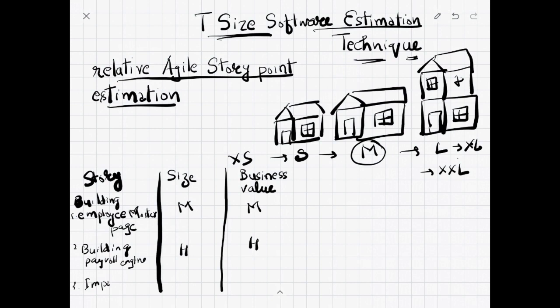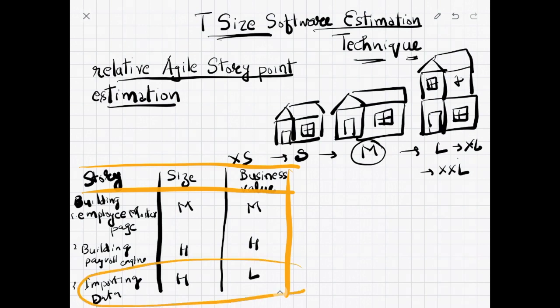Suppose we are importing data from some other system, maybe HR system. The effort level is high and the business value is very low. Using this matrix, business will decide importing data is not needed immediately. They can keep it low priority. My minimal viable product doesn't need importing data at this point.